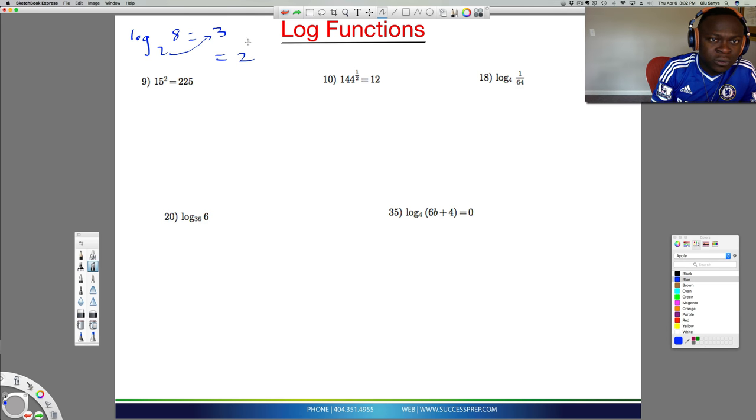2 to the 3 would then equal 8. So the way you go from log to exponent is just have the base number there come and carry the number to the right, carry it on top of its head like that, kind of like an exponent, and then make that equal to this 8.